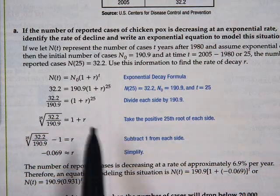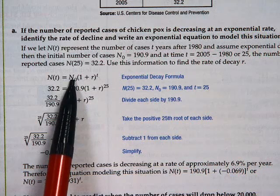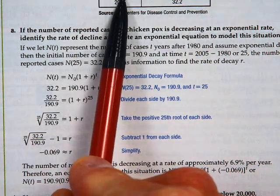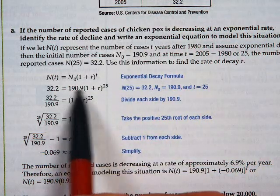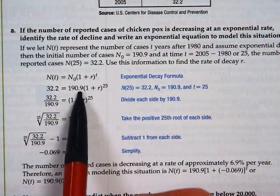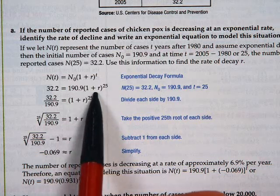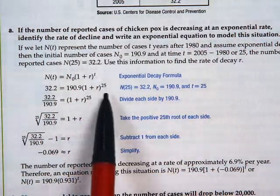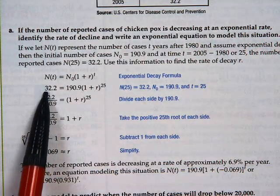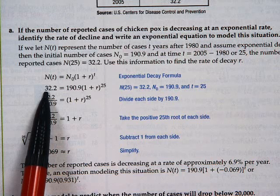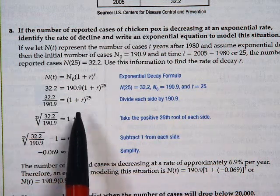Because if you think about it, you're taking some initial amount, and they're letting 1980 be the initial amount, and it's growing at a certain rate, which I don't know. So starting, or growing, in this case it's decaying, for 25 years to finally get down to 32.2.